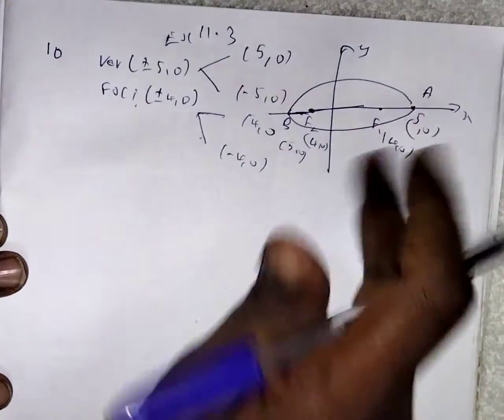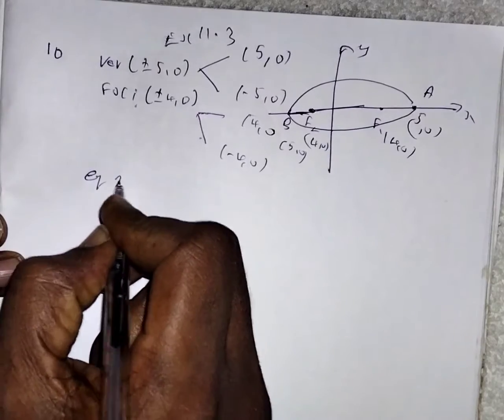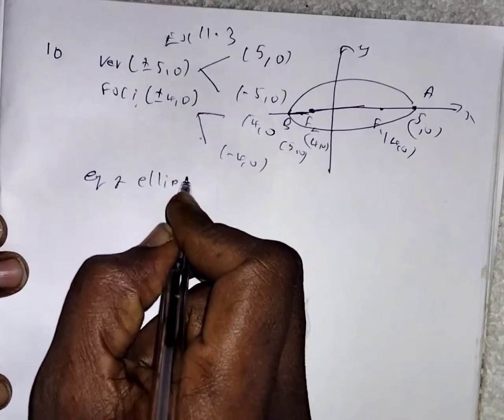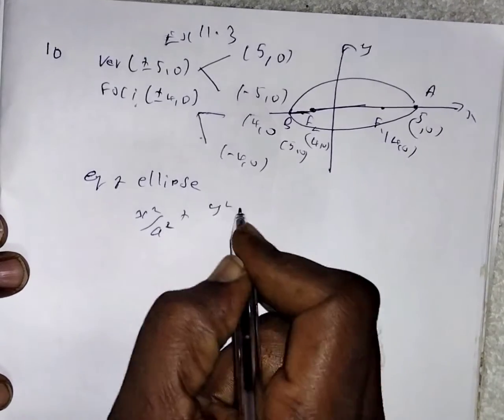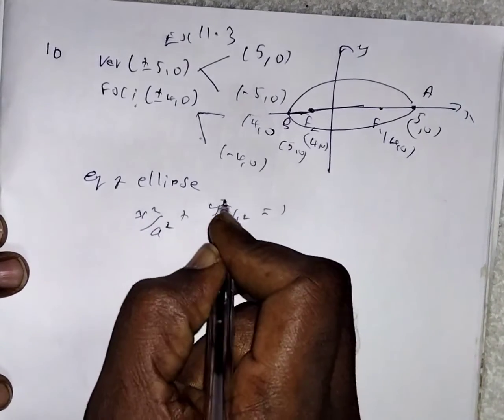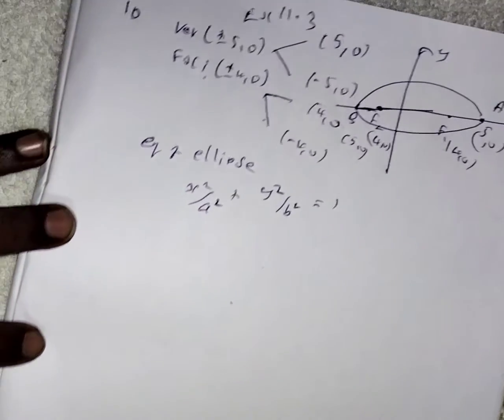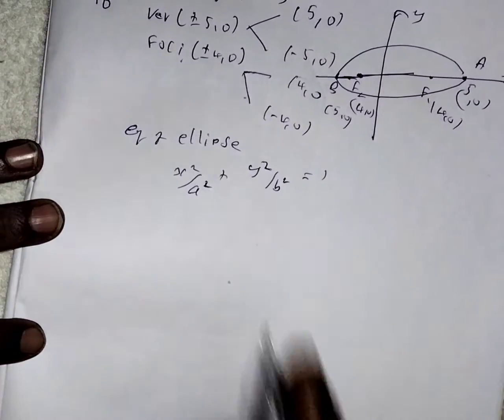With the help of the diagram, we can write the equation of the ellipse: x squared by A squared plus y squared by B squared equal to 1. So now you want to find the value of A squared and B squared.